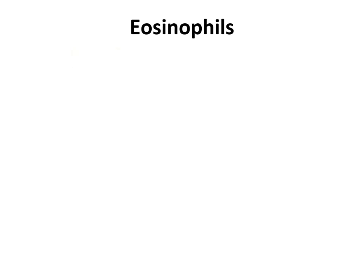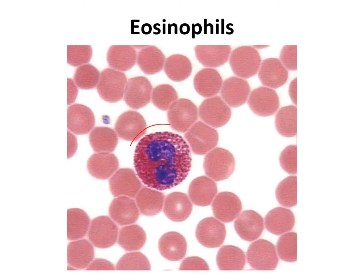The last type of granulocyte is the eosinophil. Eosinophils are also found in the blood and make up about 1 to 2% of white blood cells. Their job is to be antiparasitic — they are specifically activated against eukaryotic microbes such as protozoa and helminths.